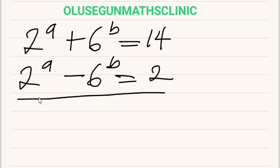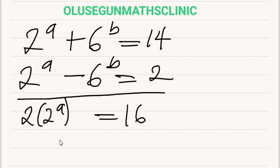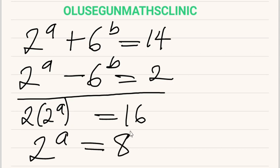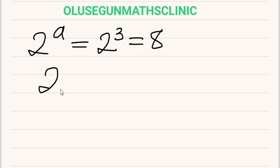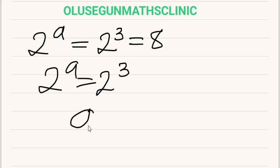Adding both equations together, we have 2 times 2 raised to power A equals 16. Dividing both sides by 2, we get 2 raised to power A equals 8. Since 8 equals 2 raised to power 3, we have 2 raised to power A equals 2 raised to power 3, meaning that A is equal to 3.